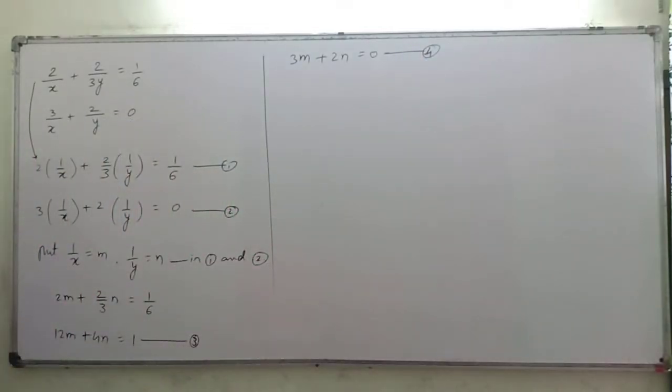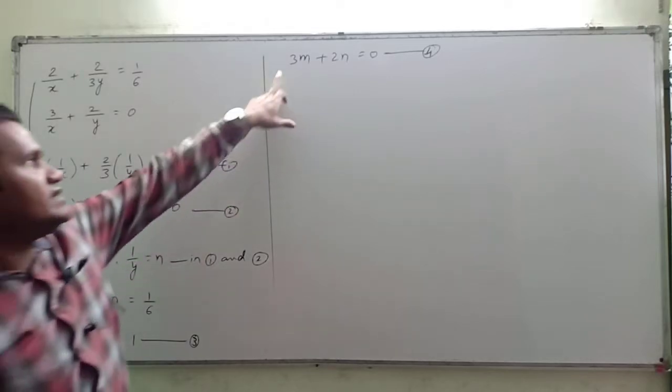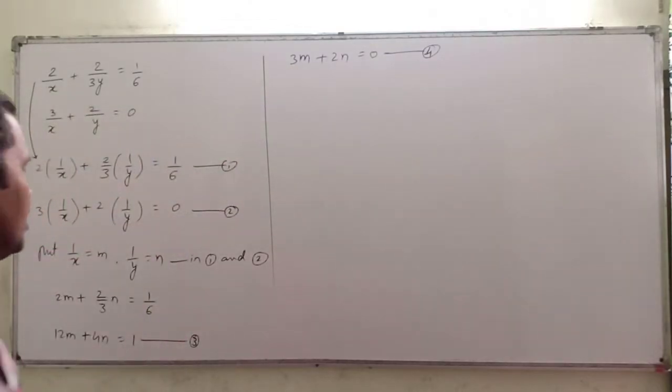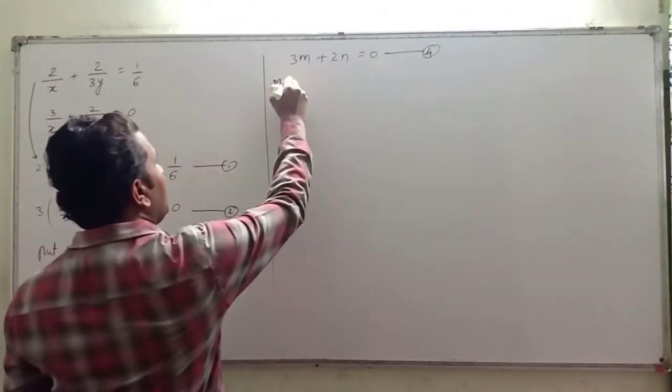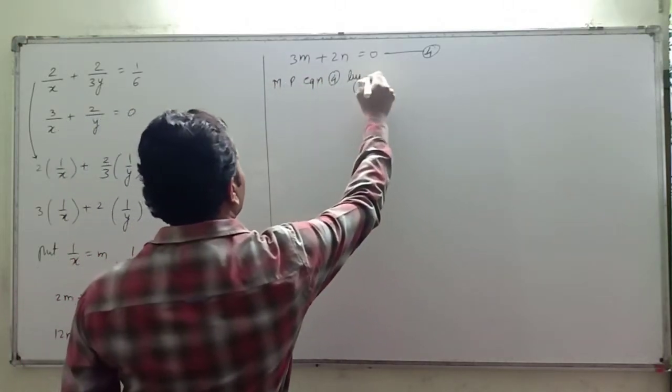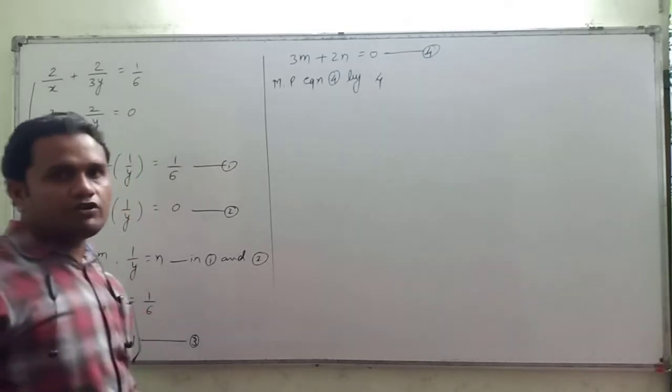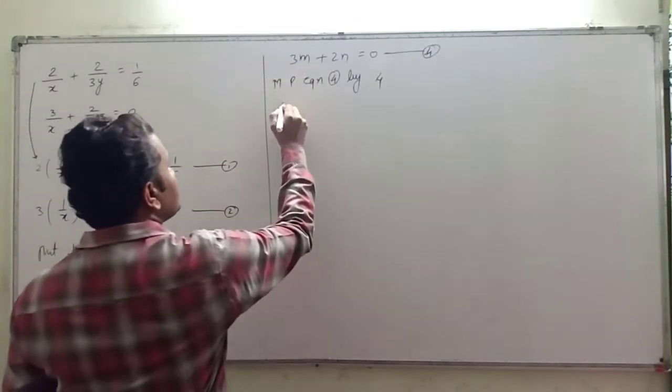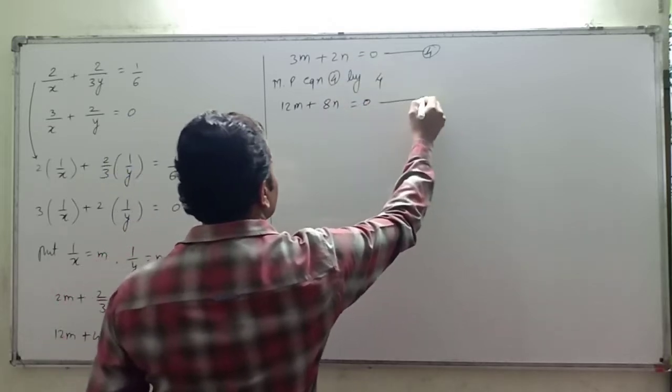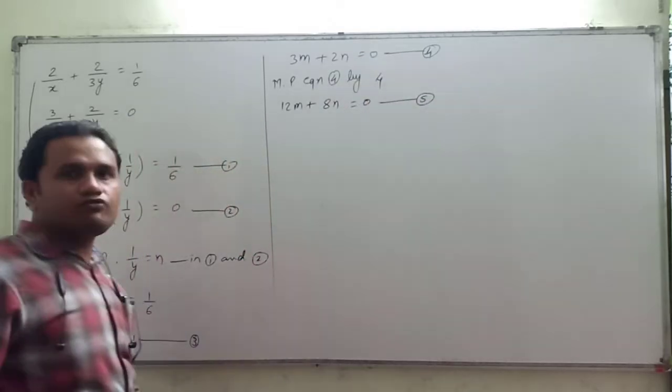Now in equations 3 and 4, clearly you can see that here it is 12m and here it is 3m. So if you multiply equation 4 by 4, it will be 12m. Multiplying equation 4 by 4: 4·3m = 12m, 4·2n = 8n, 4·0 = 0. This is equation number 5.